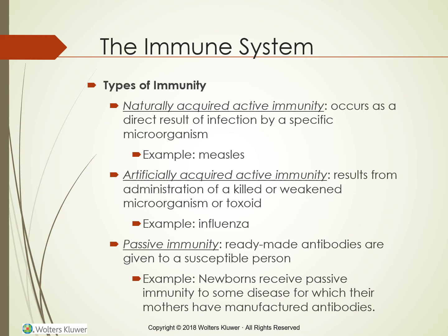Naturally acquired active immunity occurs as a direct result of infection by a specific pathogen. An example is the immunity to measles that develops after the initial infection. Not all invading microorganisms produce a response that gives lifelong immunity. Artificially acquired active immunity results from the administration of a killed or weakened microorganism or toxoid, also called an attenuated toxin. The memory cells manufactured by B-lymphocytes remember the killed or weakened antigen and recognize it if a future invasion occurs. Recommended immunization schedules are available on the Centers for Disease Control and Prevention website.